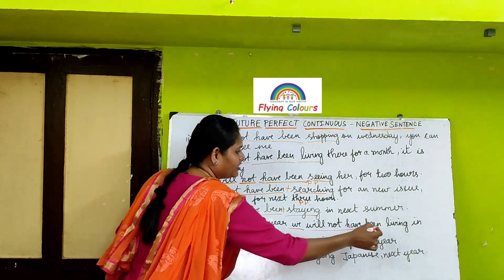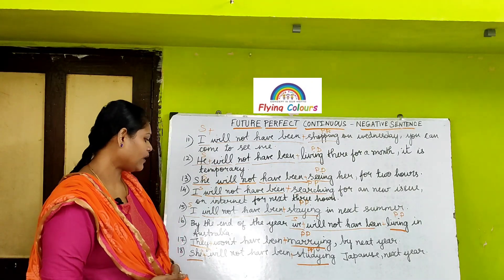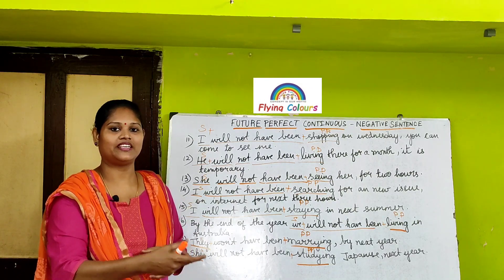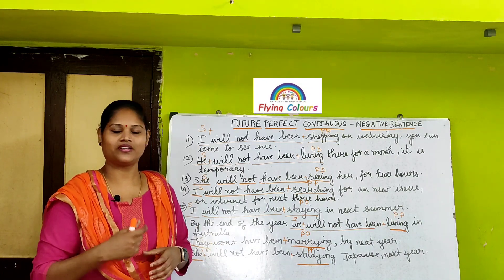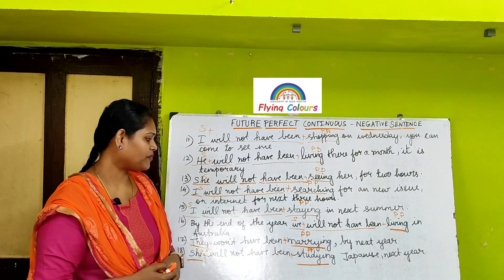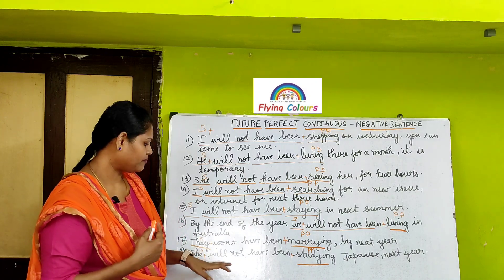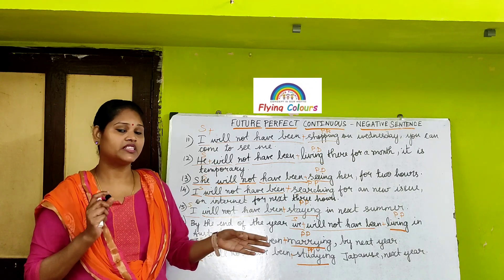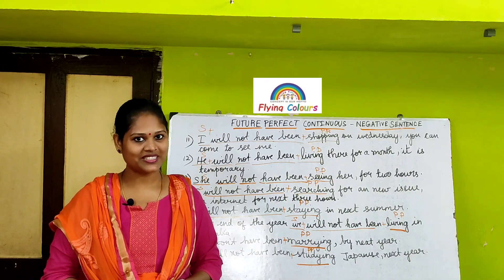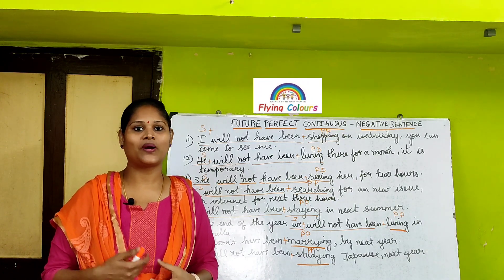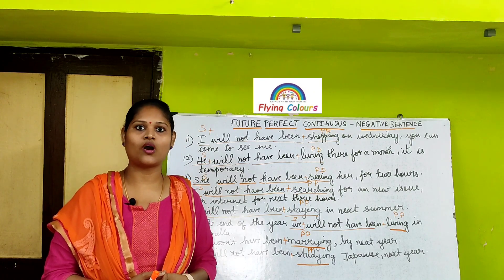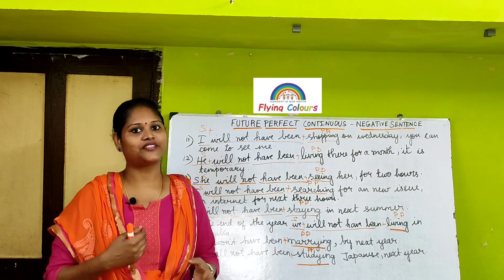We is the subject plus will not have been plus living is the present participle. They won't have been marrying by next year — within next year they will not get married, it may get postponed. Subject plus will not have been plus marrying is the present participle. She will not have been studying Japanese next year — she is the subject plus will not have been plus studying is the present participle. Whatever sentences are written on the board are useful for understanding the concept. 10th, 11th, 12th students preparing for board exams and common exams can look at these sentences and understand the concept.